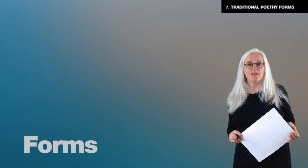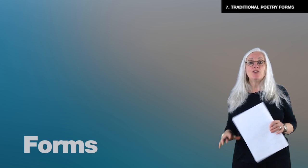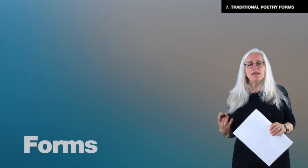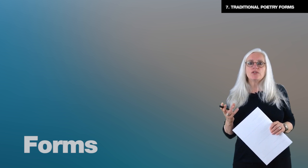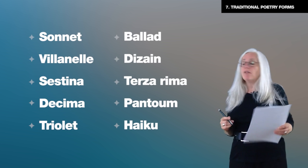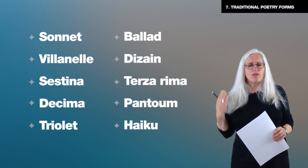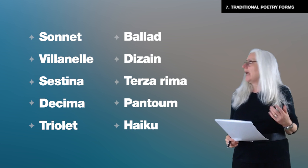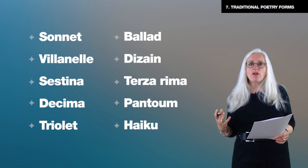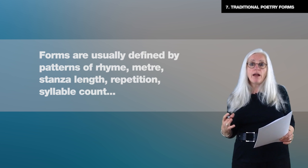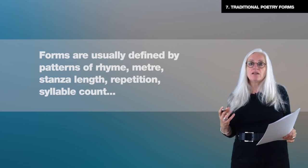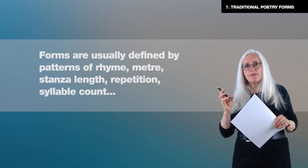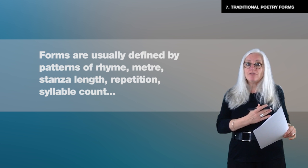We finished the last section on meter, looking at the limerick, and that brings us neatly onto this section of the course, which is about forms. What do I mean by forms? I mean some of these traditional structures of poems such as sonnets, villanelles, sestinas, and ghazals — there's a whole lot of them. Many of them are very traditional but they're still being used now by modern poets. Usually forms are defined by patterns: patterns of rhyme, of meter, stanza length, the structure of the stanza, syllable count even. There are all sorts of things that say this is a sonnet, this is a villanelle.